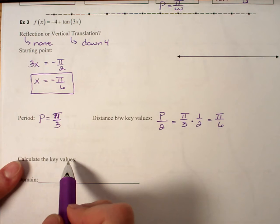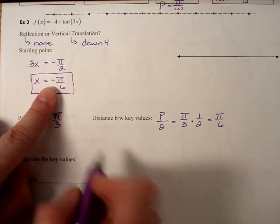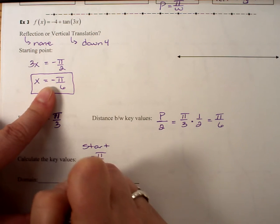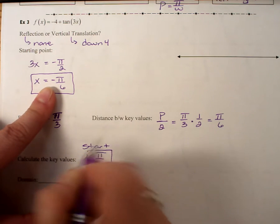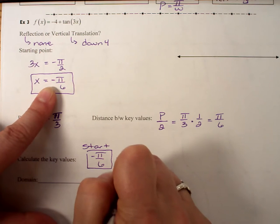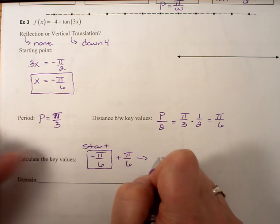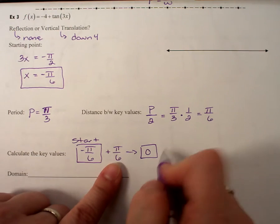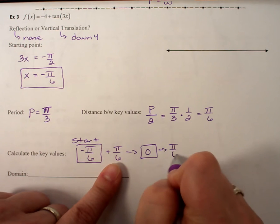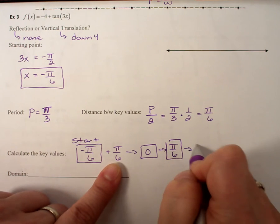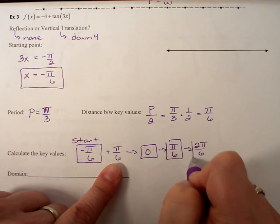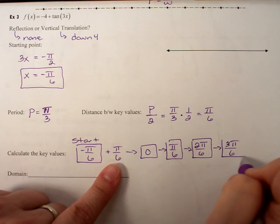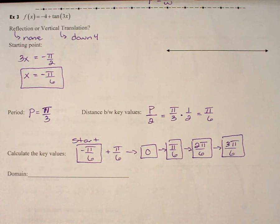Now, calculating my key values, I need to combine some things together. So I'm going to get my start value, the negative π/6. I'm going to add to that my π/6, which means my next key value is actually 0. That's okay. Keep adding. I'm going to get π/6. Add again 2π/6 that we will ultimately reduce. Add again 3π/6. So I just needed to get those four key values.